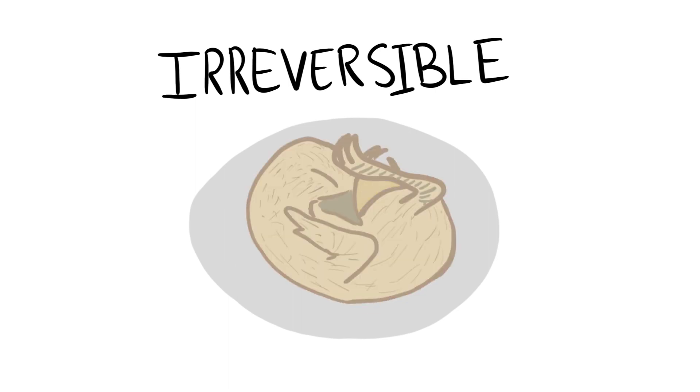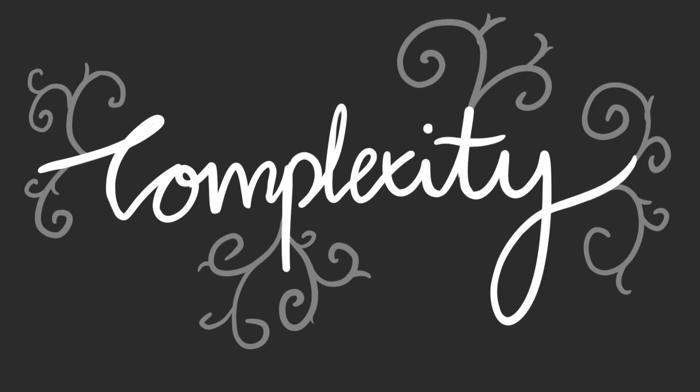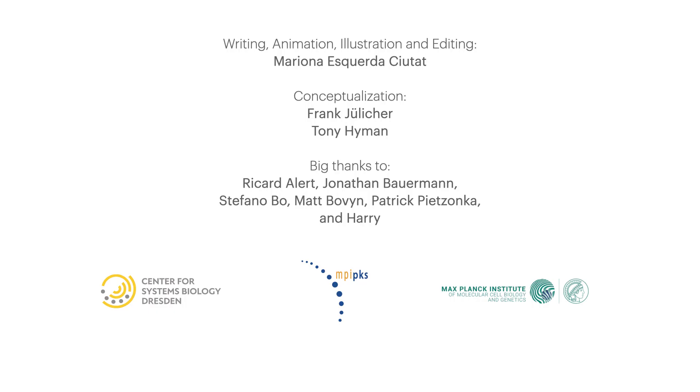But in nature, we see examples of irreversible processes that seem to contradict this relation. For example, a chicken becomes more complex and ordered as it develops. How does the chicken overcome the tendency to decay? The answer to this question is fundamental to understanding how complexity emerges in nature. Watch other science sketches to learn more.